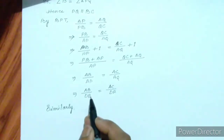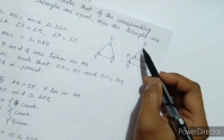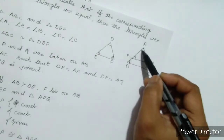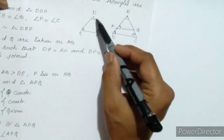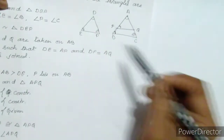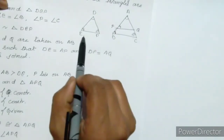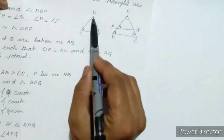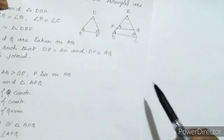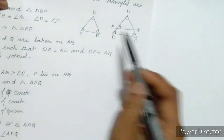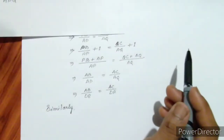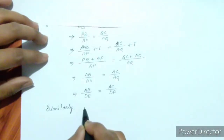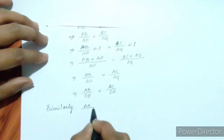Therefore we get AB divided by DE equal to AC divided by DF, and also BC divided by EF.